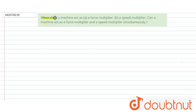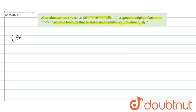The question is: when does a machine act as a force multiplier and when as a speed multiplier? Can a machine act as a force multiplier and speed multiplier simultaneously? For the first part, a movable pulley works as a force multiplier.